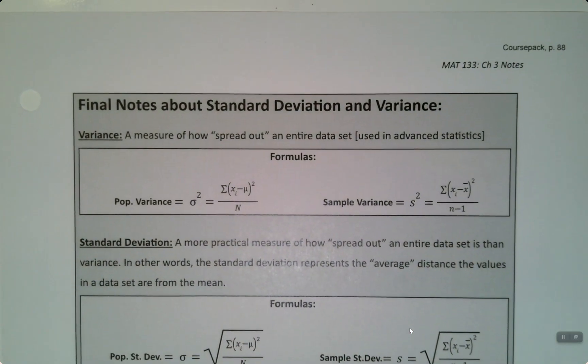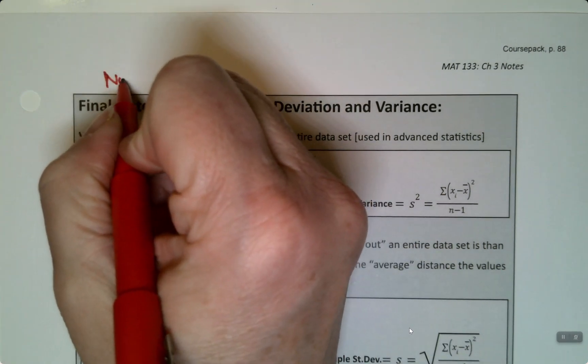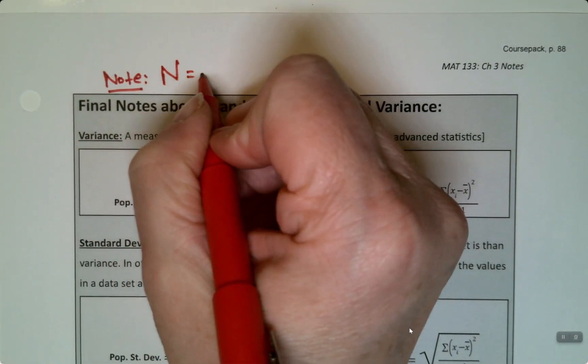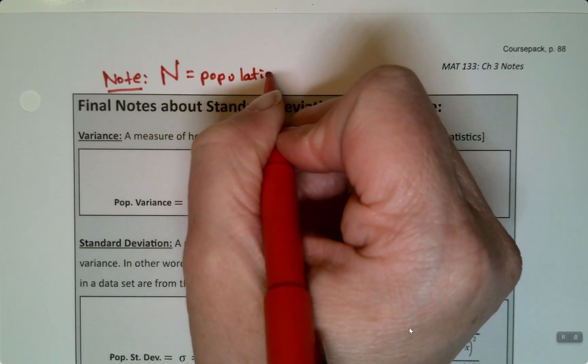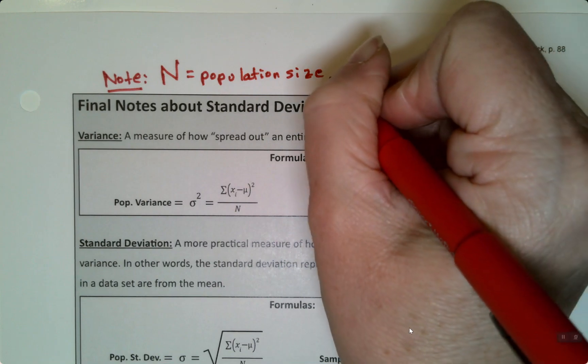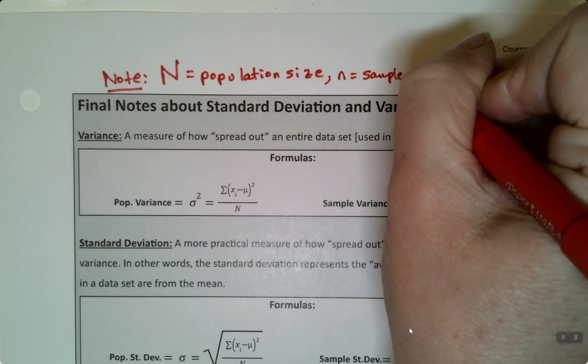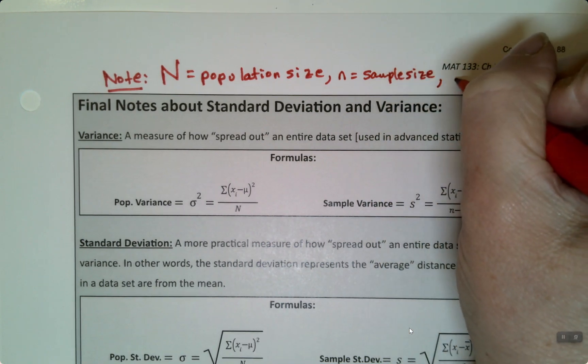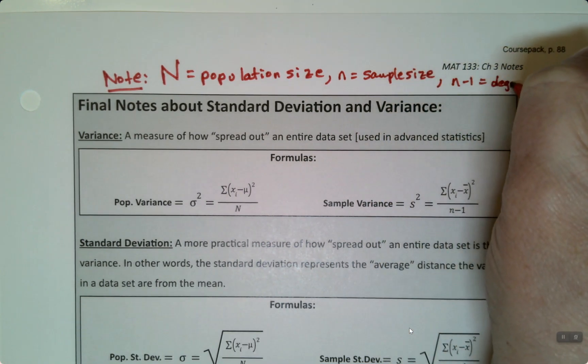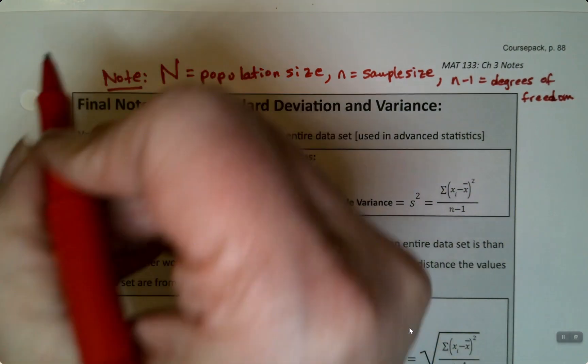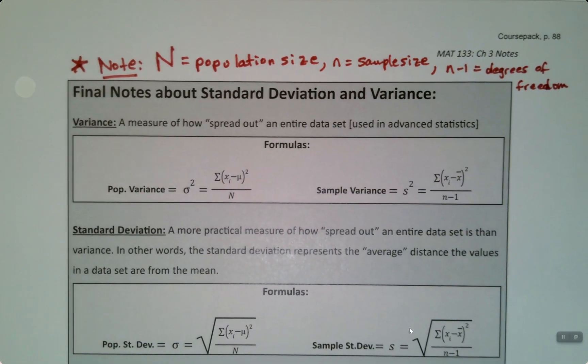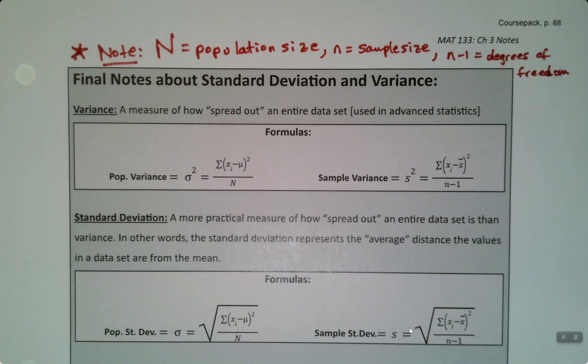And this is a good time to note, in case we don't note it anywhere else. Capital N is the population size. Little n is the sample size. These are some definitions we'll need later on. And n minus 1, I mentioned before, but it's the degrees of freedom. We'll need all of that in the later chapters, so you might as well know those definitions right now.